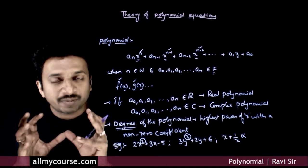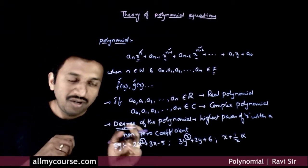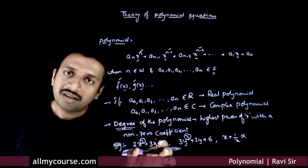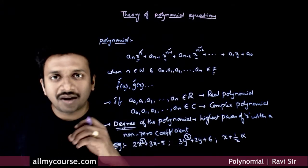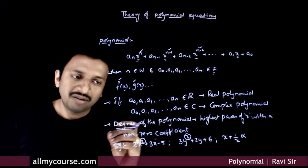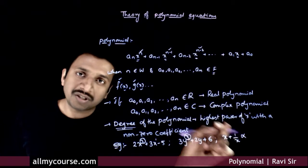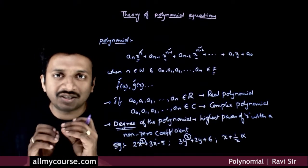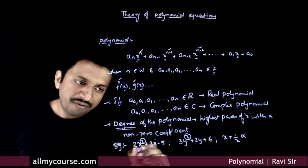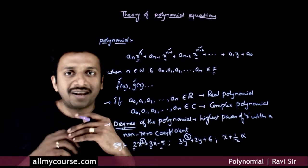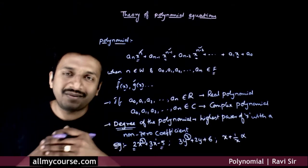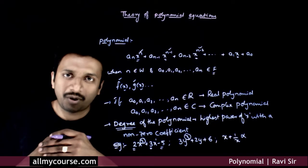To distinguish whether an expression is a polynomial or not, you need to observe the powers of x present in the expression. If all the powers of x are whole numbers, then it is a polynomial. If you have negative powers or fractional powers, it is not a polynomial. If all the coefficients of the polynomial are real, then it is called a real polynomial. If some of them are complex, then it is called a complex polynomial.